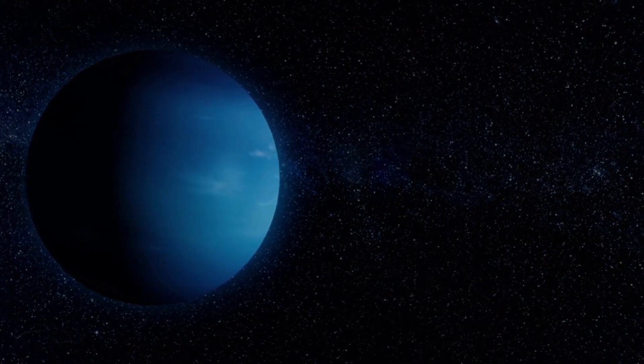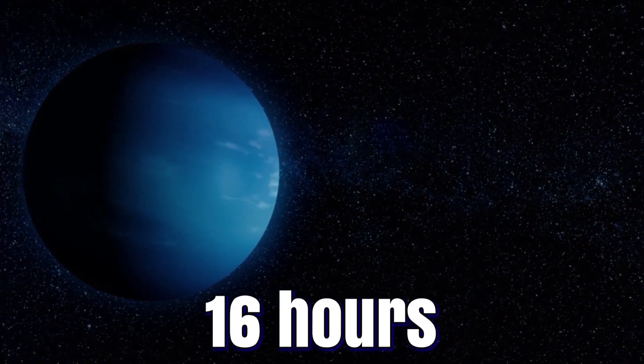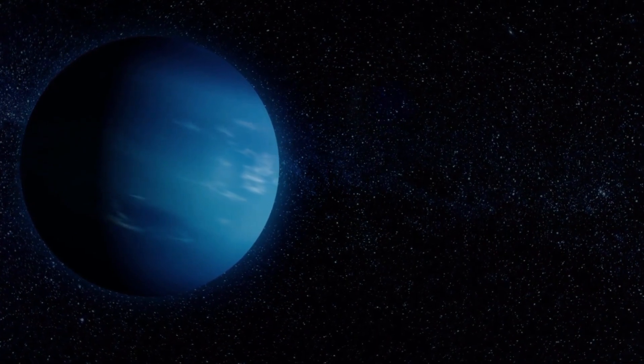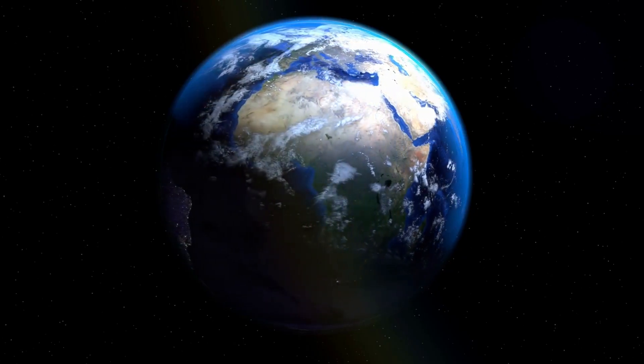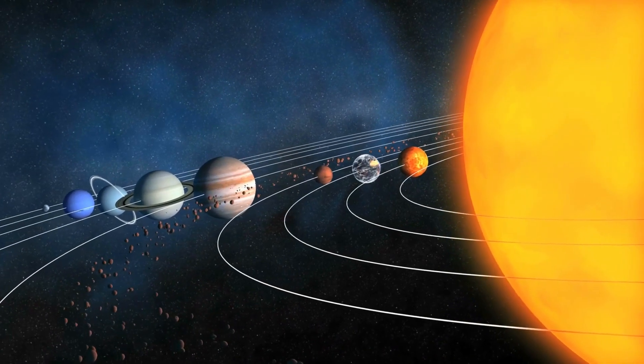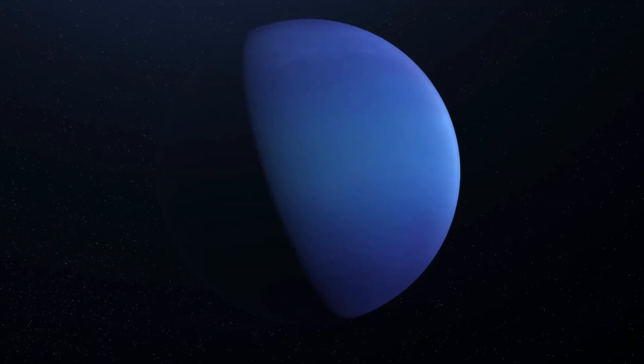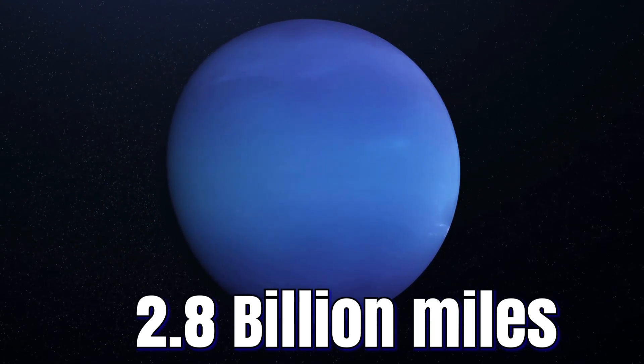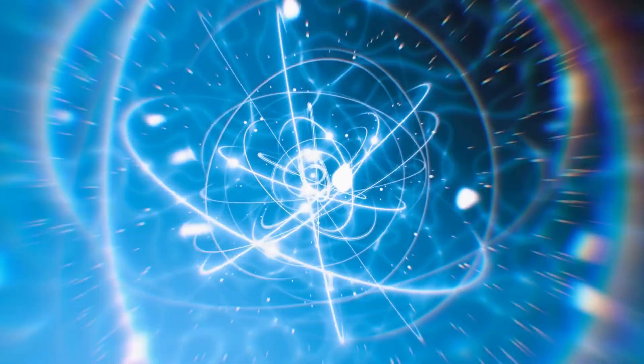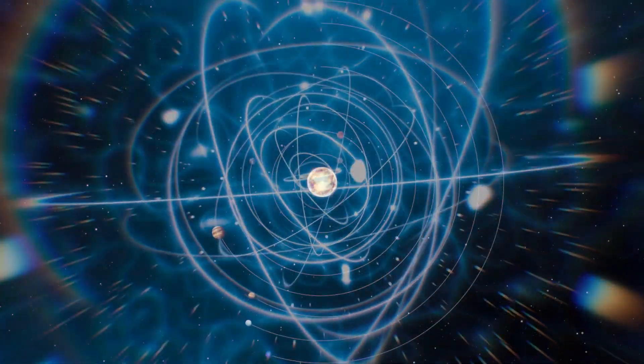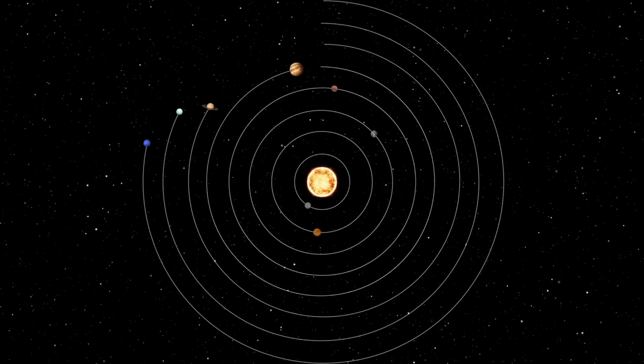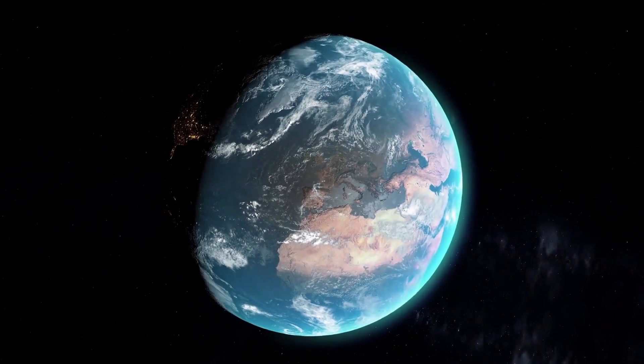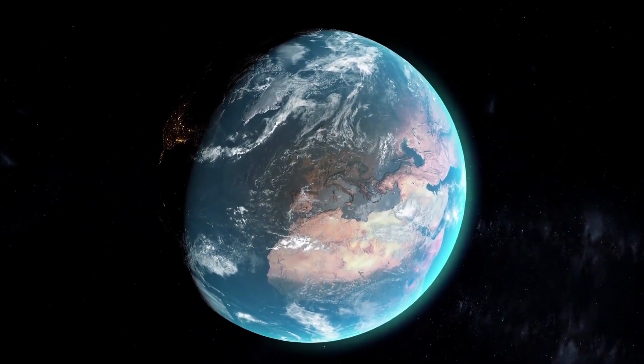Additionally, Neptune rotates once every 16 hours, meaning a day on Neptune is 8 hours shorter than Earth's. It's also worth noting Neptune's distance from the Sun, as it is the planet farthest away from our star at a distance of around 2.8 billion miles. It's hard to imagine that kind of distance, but to put it in perspective, that's 30 astronomical units away from the Sun. In comparison, the Earth is only one astronomical unit away.